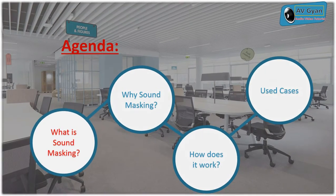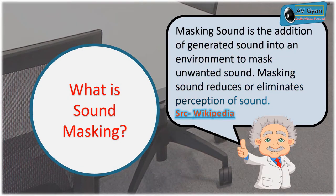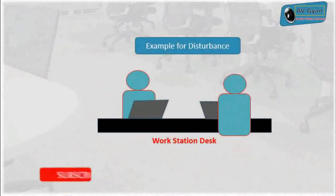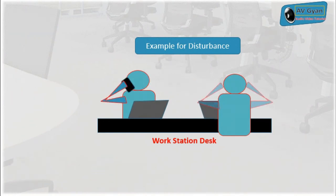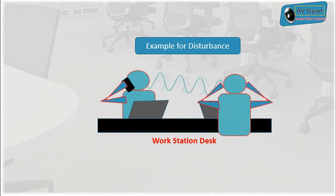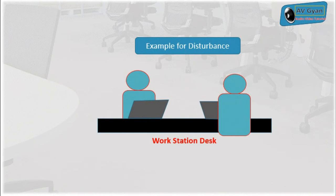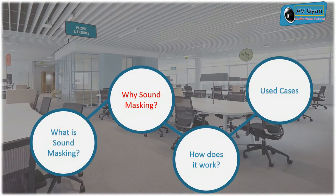Sound masking is the addition of generated sound into an environment to mask unwanted sound. It reduces or eliminates the perception of sound. Consider a workspace where two people are sitting next to each other. One starts talking on the phone in their original language which the next person cannot understand. The chances of the second person feeling disturbed are very minimal unless the first person is very loud or the second person can relate to what is being said. In a nutshell, sound masking adds an electronically generated sound in a given room, hall, or open office premises to increase the ambient noise.